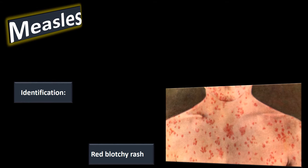After the prodromal phase, you move into the traditional rash — that red blotchy rash everybody associates with measles. This rash starts at the face and makes its way down the body. You'll sometimes hear it referred to as a cephalocaudal rash — cephalo referring to the head and caudal to the body. Measles is a virus, so it is taxing on the immune system.